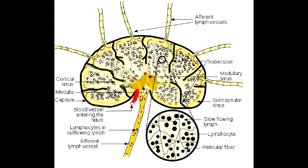What is a lymph node? A lymph node is an oval-shaped organ of the immune system which is distributed widely throughout the body. It has many afferent and one or more efferent lymphatics. Lymph nodes are also encapsulated with trabeculae.